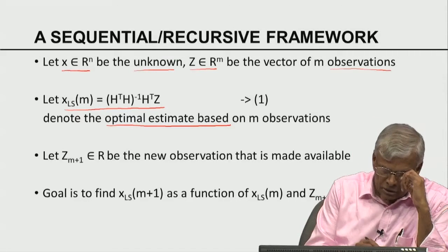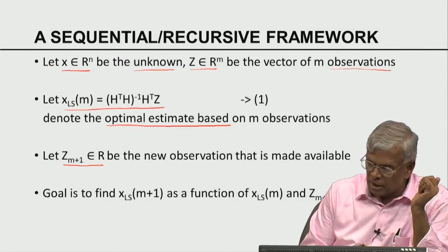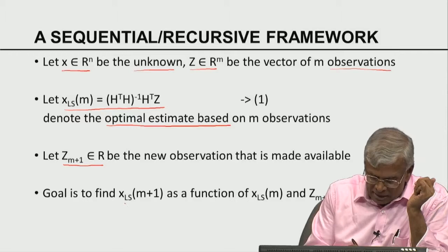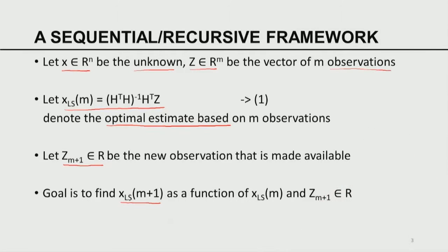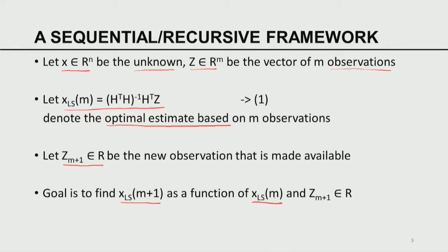Now let us pretend a real new observation Z_{M+1} comes into play. I would like to estimate X_LS(M+1) — this is the new one, that is the old one. I need to convert from the old to the new when the (M+1)-th observation comes into the picture. The basic idea is: as and when new information is given, how do I update my old belief into a new estimate? I have an old estimate, a new observation, and I would like to get a new estimate — that is the sequential problem.